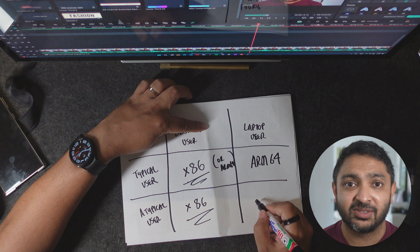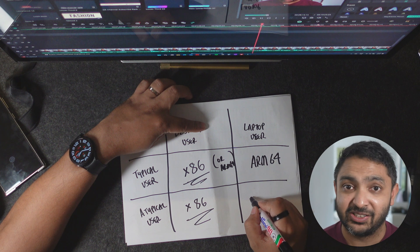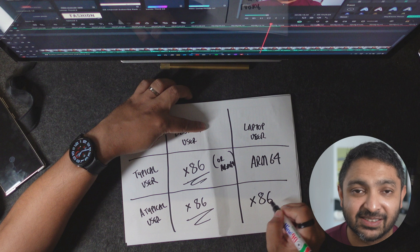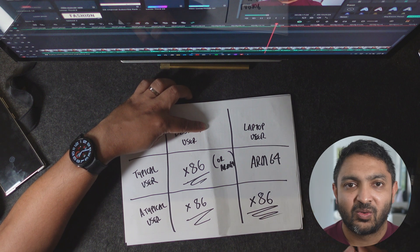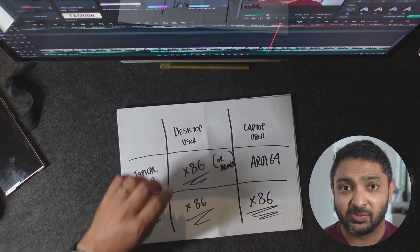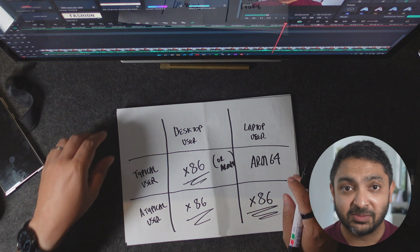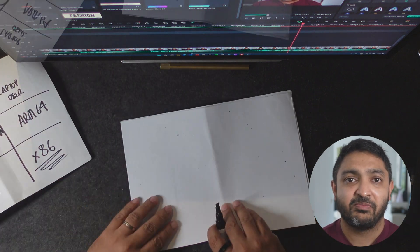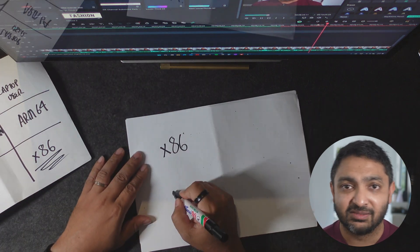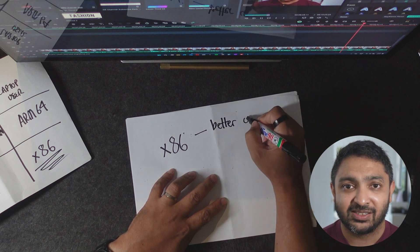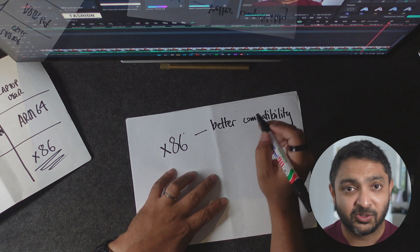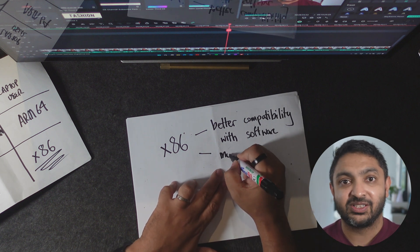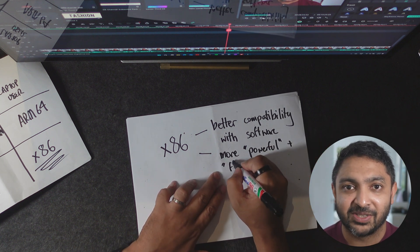If you happen to be someone who needs a laptop but is an atypical user — maybe you're a serious gamer or you run a lot of rendering projects on 3D Studio Max — then you might consider an x86 chip. Whilst the battery life won't be as robust, what you will get is better software compatibility and the ability to use your GPU very effectively.